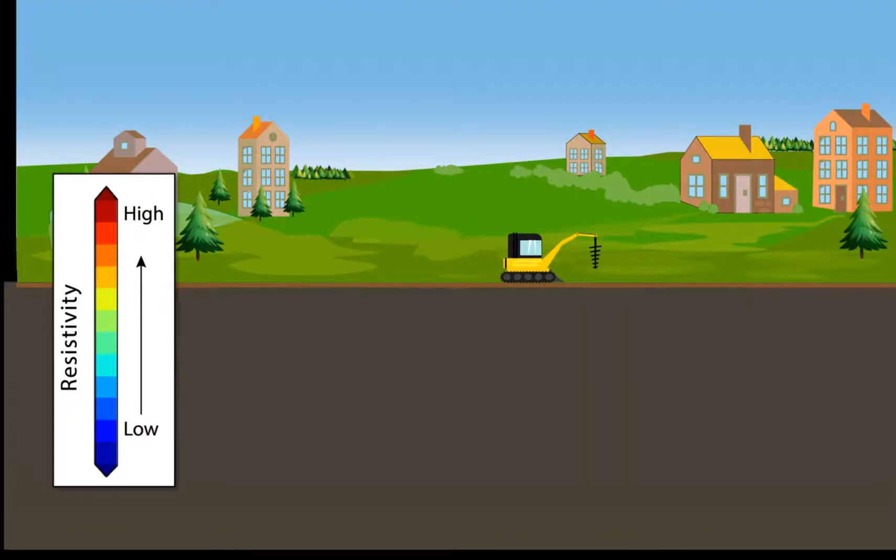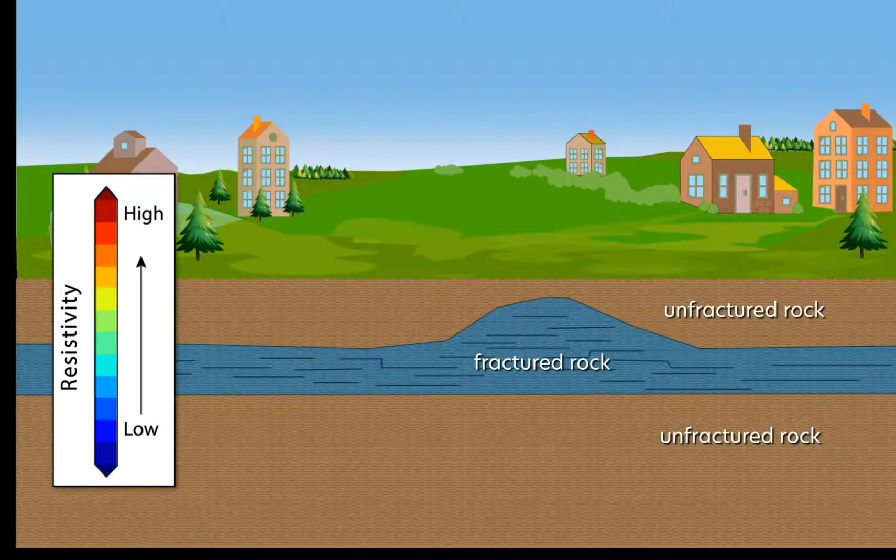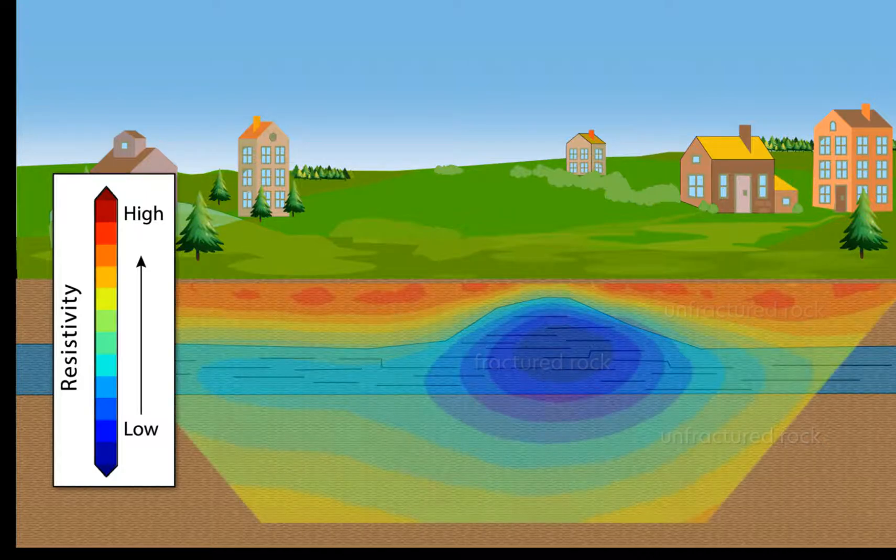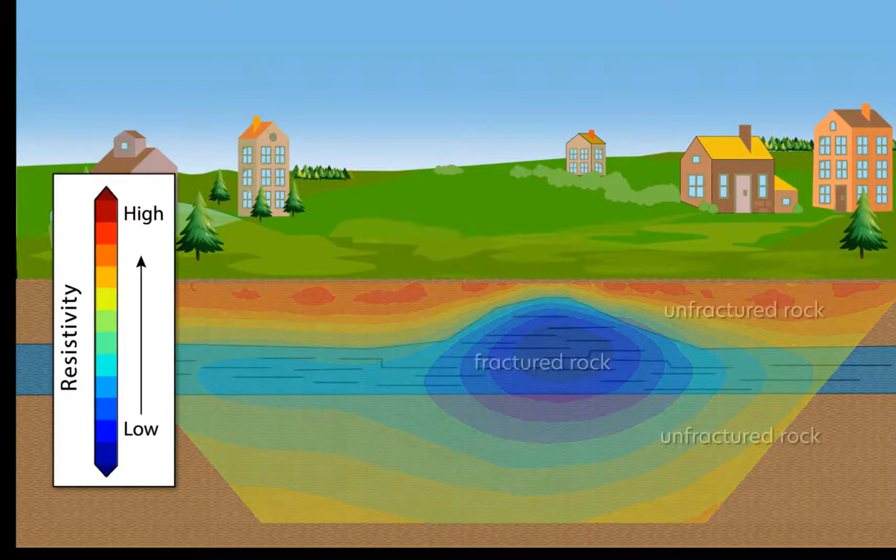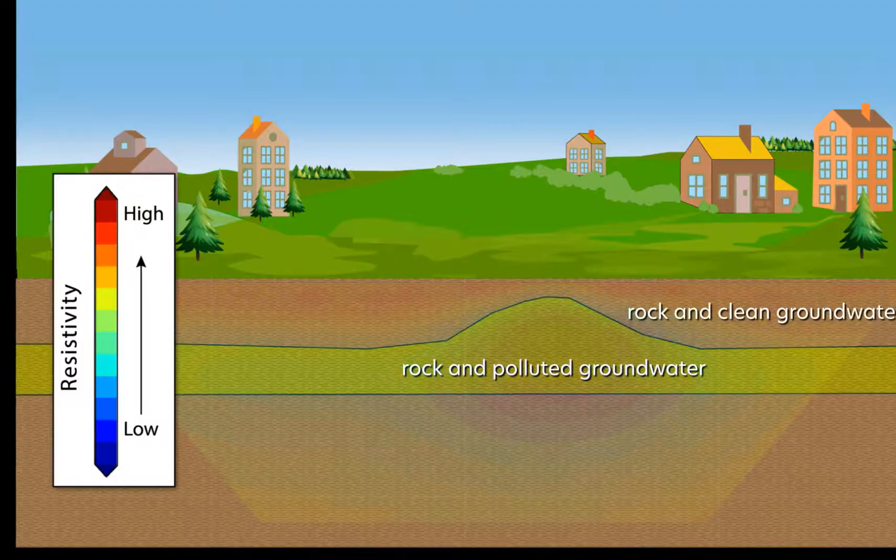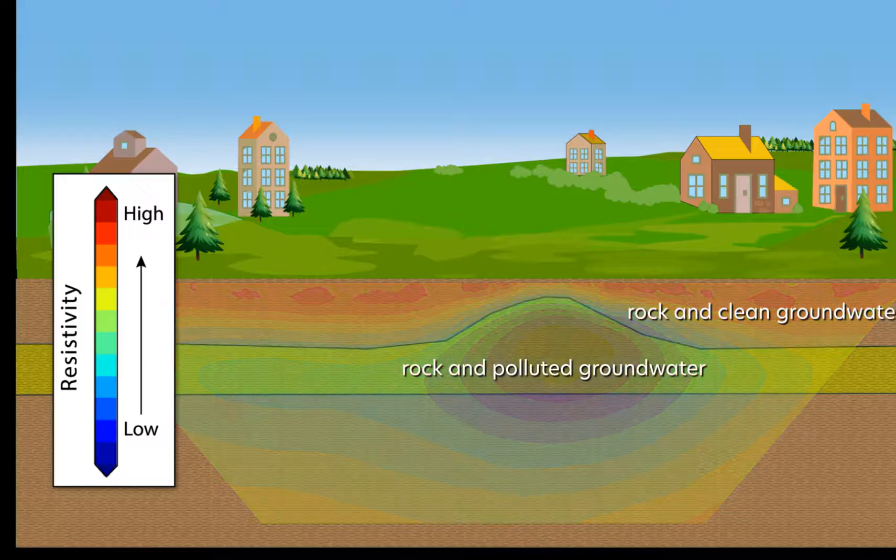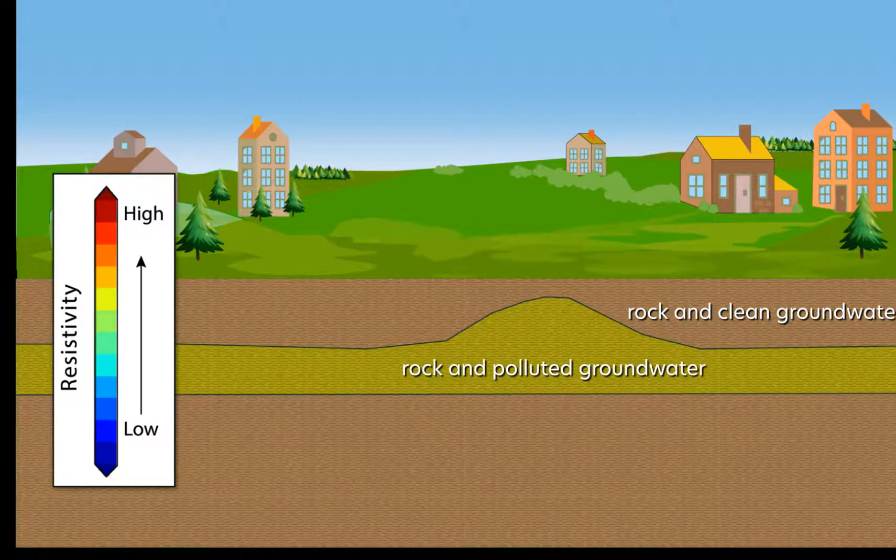However, we need to be careful, because multiple factors can impact the resistivity. It's true that the more fractured the rock, the lower the resistivity if there is water in the fractures. But, a pollution plume could produce a similar ERT profile, even in uniformly fractured rock. This is because contaminated water has lower resistivity than clean groundwater.